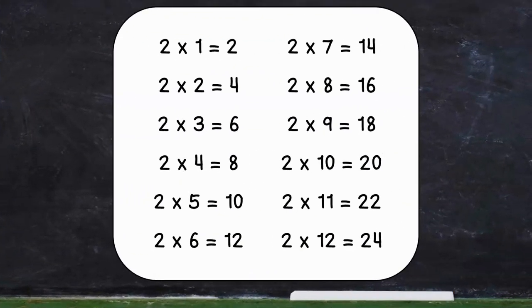2 times 1 equals 2. 2 times 2 equals 4. 2 times 3 equals 6. 2 times 4 equals 8. 2 times 5 equals 10. 2 times 6 equals 12. 2 times 7 equals 14. 2 times 8 equals 16. 2 times 9 equals 18. 2 times 10 equals 20. 2 times 11 equals 22. 2 times 12 equals 24.